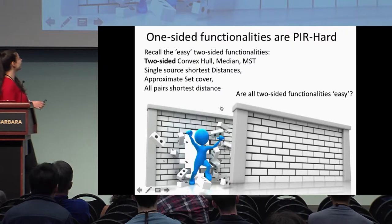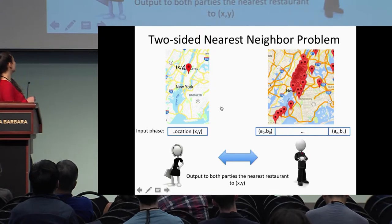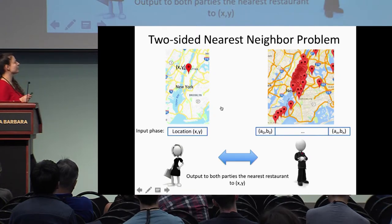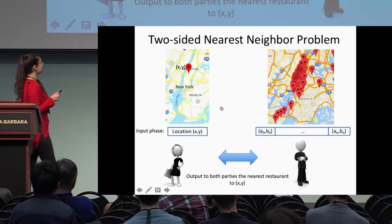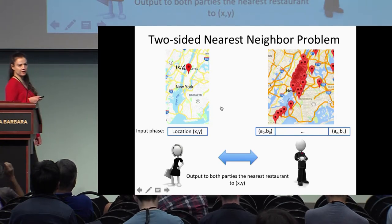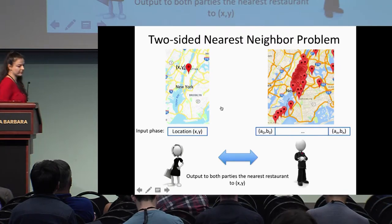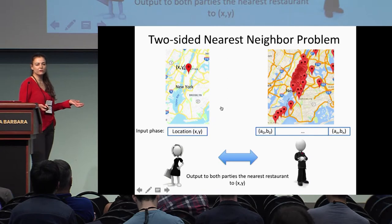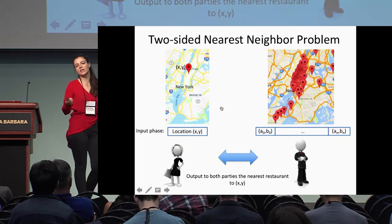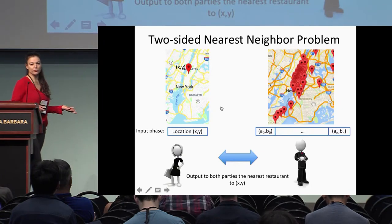Maybe not. Consider a real scenario: Alice has a location in Manhattan and wants to go to a restaurant, while Bob has the map of all restaurants. We have the nearest-neighbor problem, which outputs the nearest restaurant to Alice's location, and Alice wants to keep her location private. Why is this a two-sided functionality? Because we are acting on the output — we are going to the restaurant, so that information will be publicly known. It's an inherently two-sided functionality capturing natural problems.